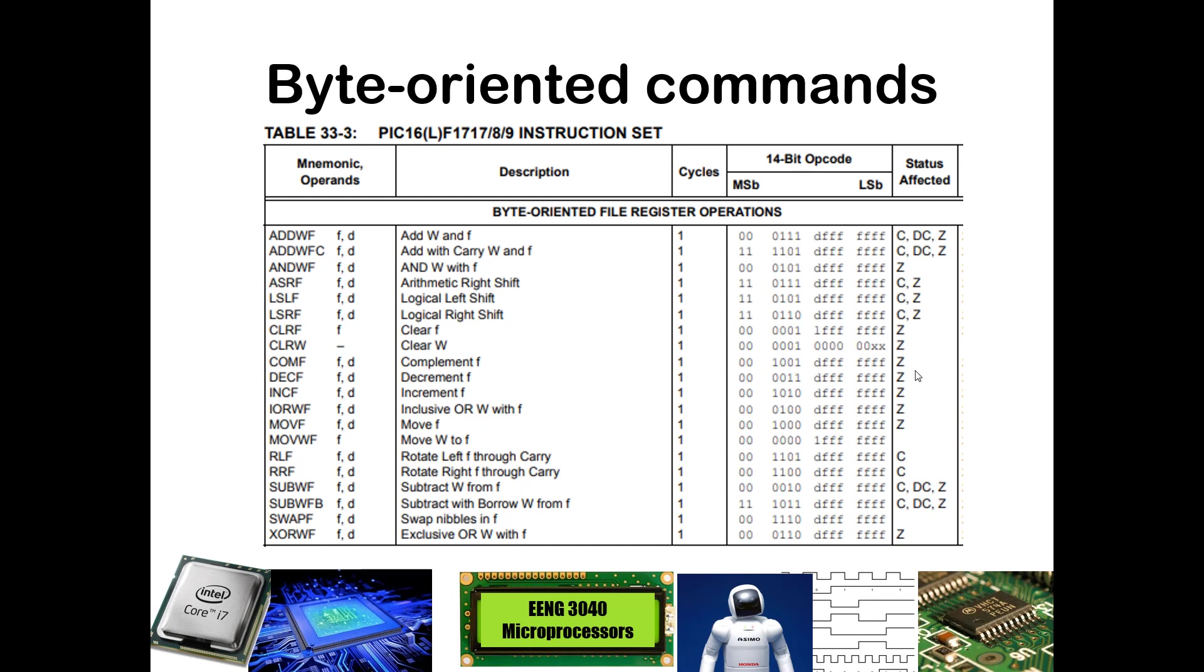We will first begin by looking at table 33-3 from the PIC datasheet. In this table, we can see a list of the byte-oriented commands and their syntax and what they actually can do. We also see over to the right-hand side which bits of the status register those particular commands may affect.